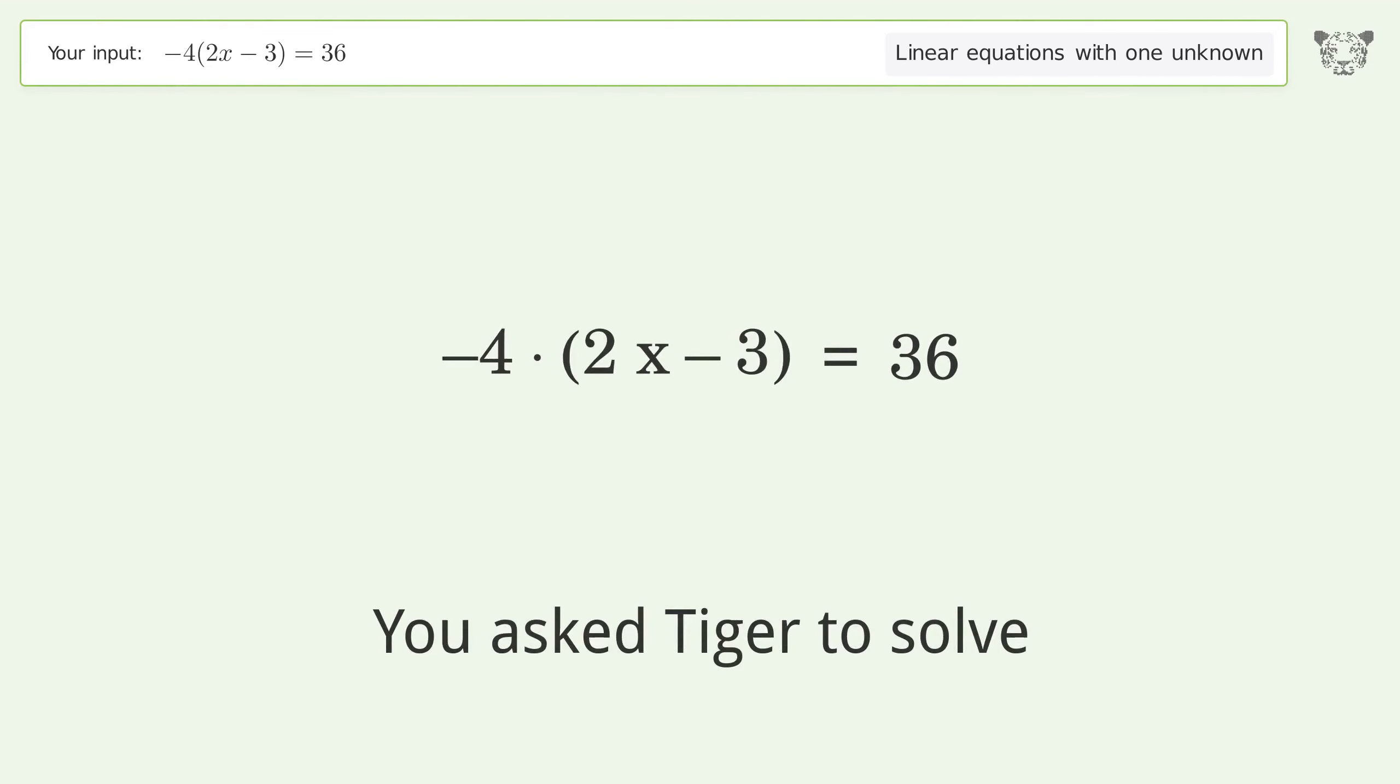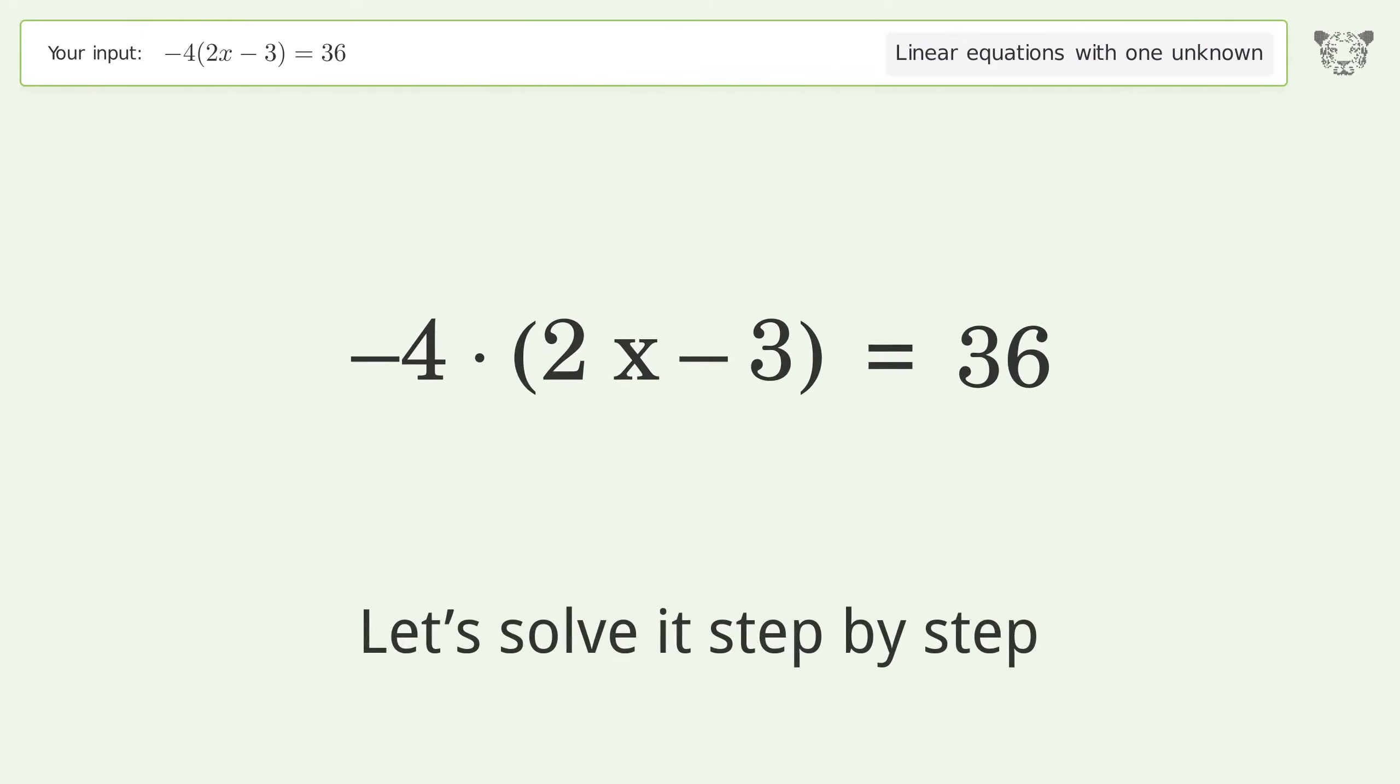You asked Tiger to solve this problem dealing with linear equations with one unknown. The final result is x equals negative 3. Let's solve it step by step. First, simplify the expression.